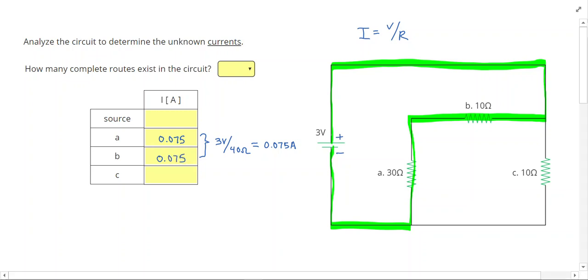Our other route, from positive to negative, which I'll highlight in blue, takes us from the positive end through resistor C and back to the negative end of the battery.